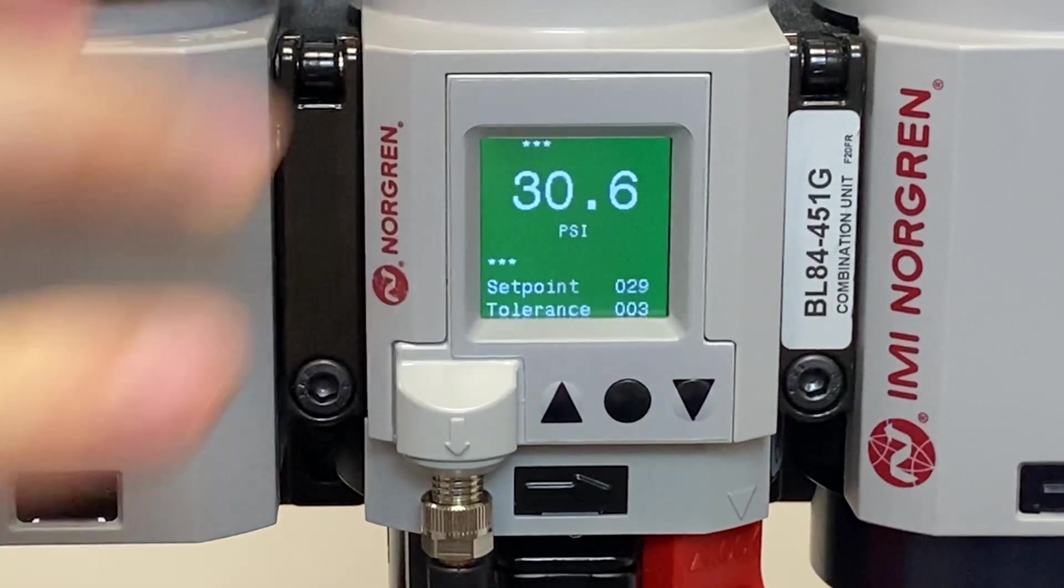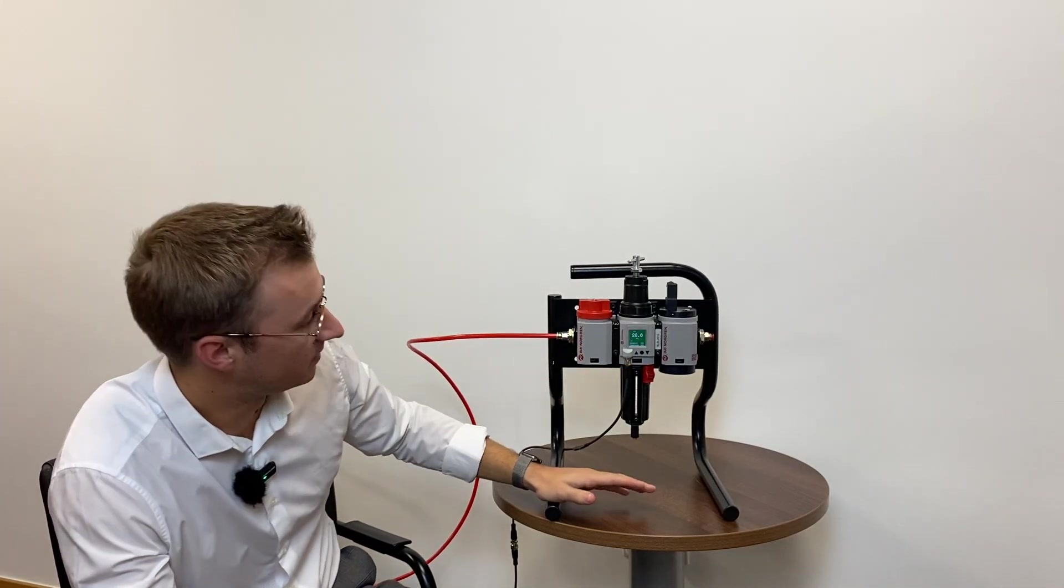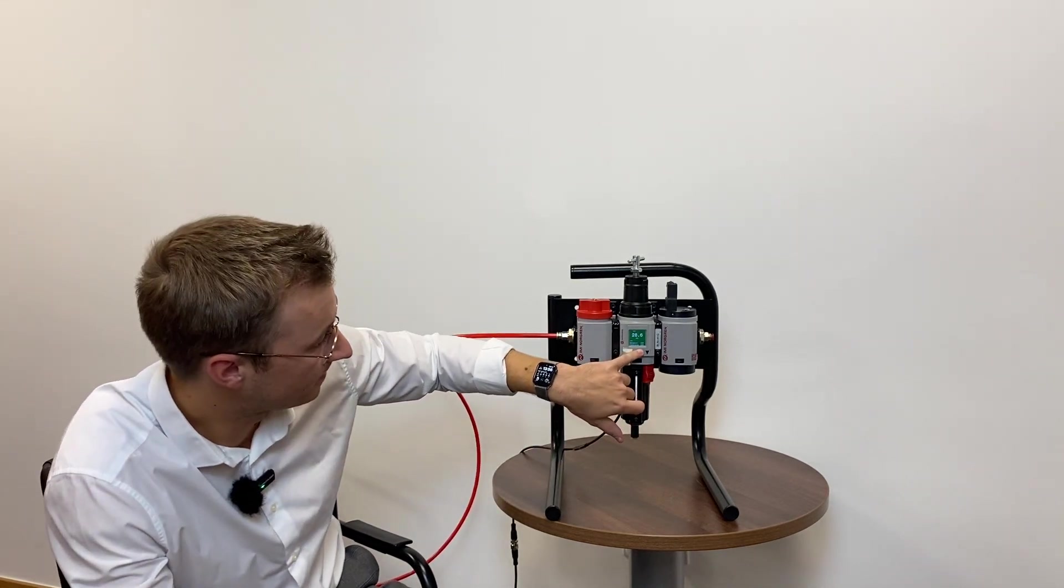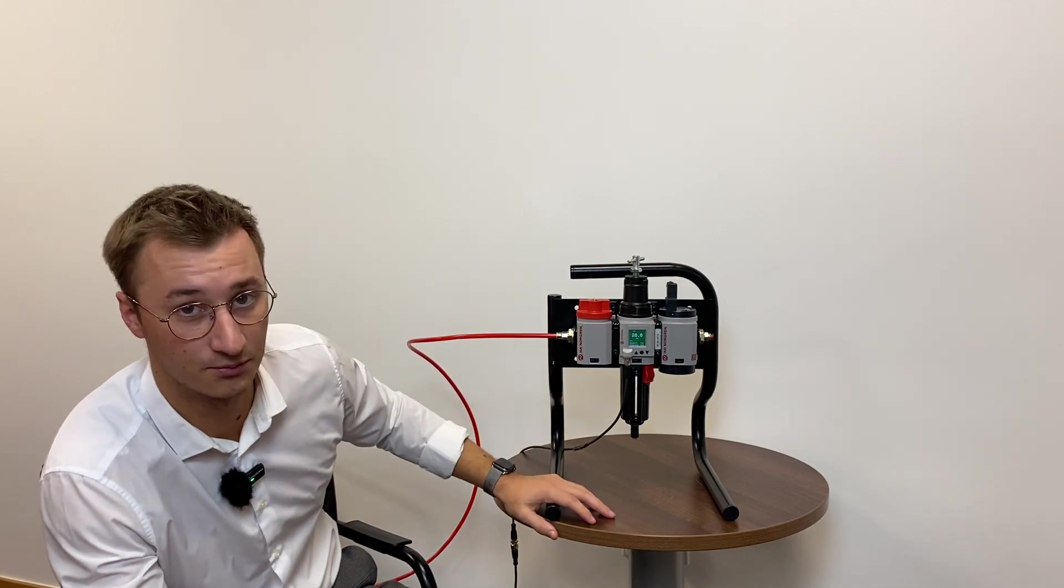We've now got our set point is 29 PSI, our tolerance is 0.03, and we've got 28.6 PSI on the screen there, and we're in that green window.